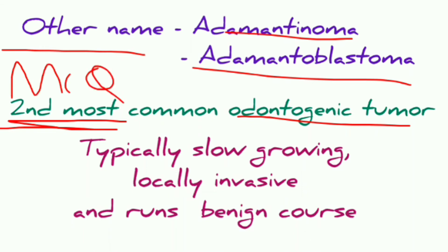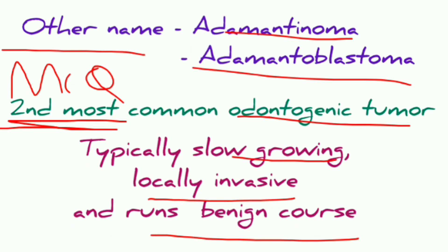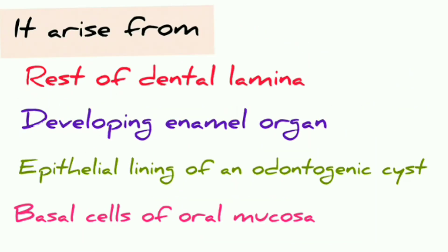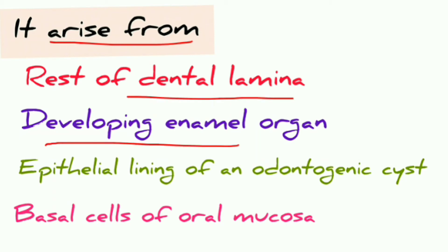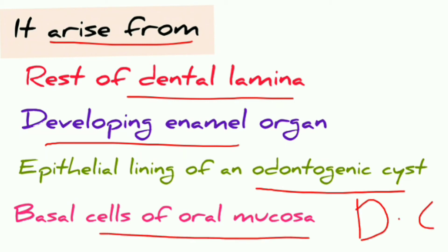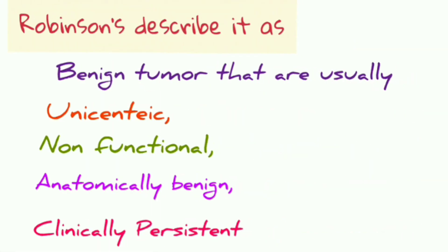It is a typically slow growing, locally invasive tumor that runs a benign course. It can arise from the rest of dental lamina, developing enamel organ, epithelial lining of odontogenic cyst (usually dentigerous cyst), and basal cell of the oral mucosa.